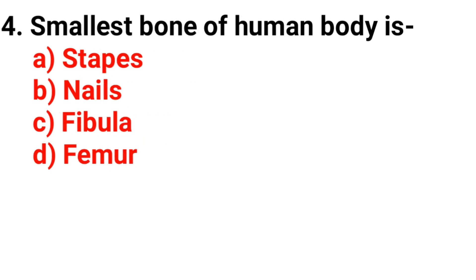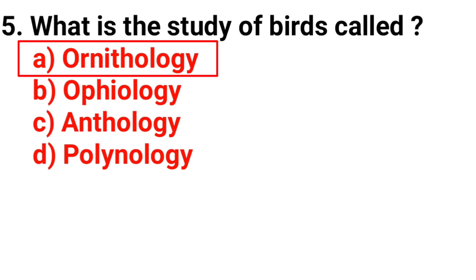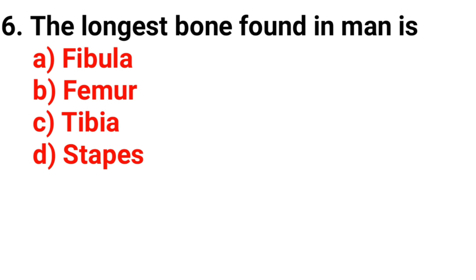Question 4. Smallest bone of human body is? Option A, Stapes. Question 5. What is the study of birds called? Option A, Ornithology. Question 6. The longest bone found in man is? The answer is option B, Femur.